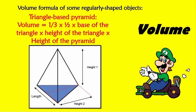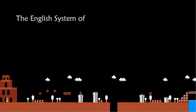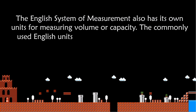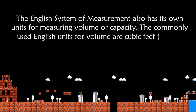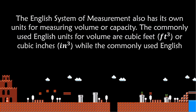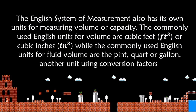The English system of measurement also has its own units for measuring volume or capacity. The commonly used English units for volume are cubic feet or cubic inches, while the commonly used English units for fluid volume are the pint, quart, or gallon.